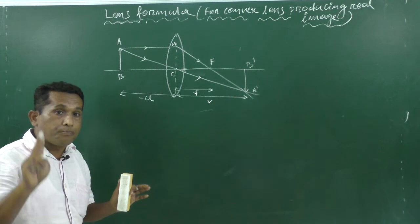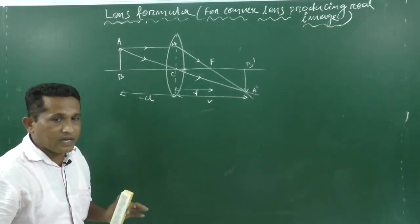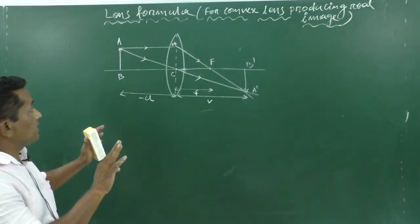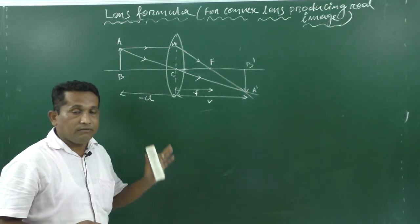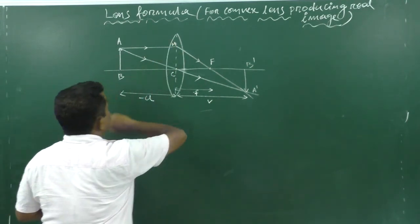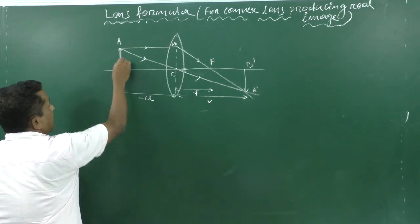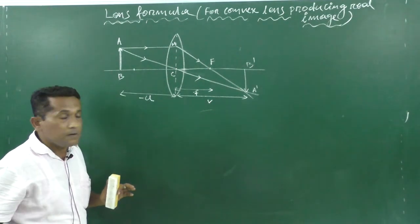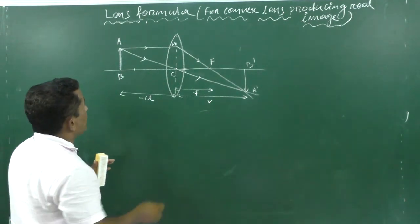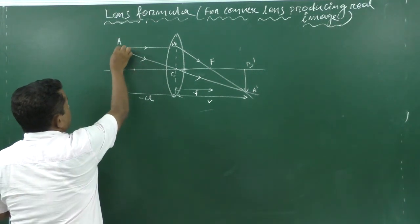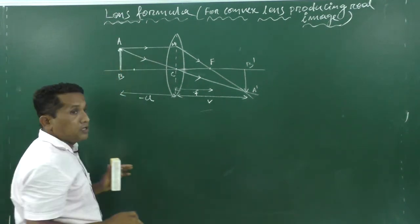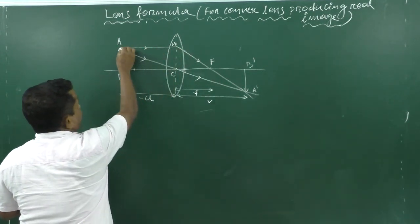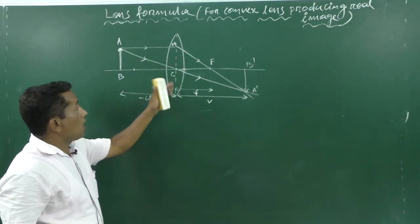Here we have two pairs of triangles, and with the help of those two pairs we can get the lens formula. I have already drawn the diagram. Here is your convex lens, and this is object AB placed just beyond the center of curvature. From the object AB you need to take at least two rays.